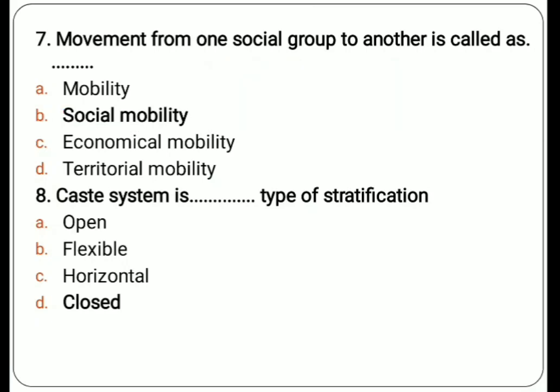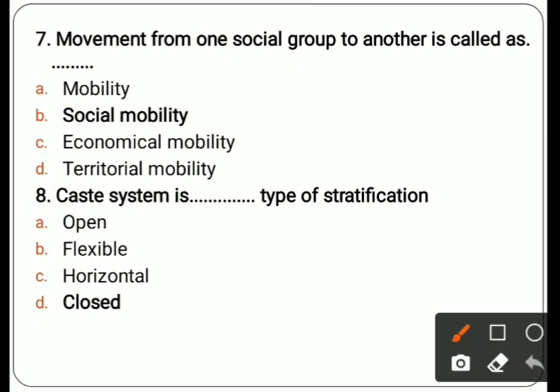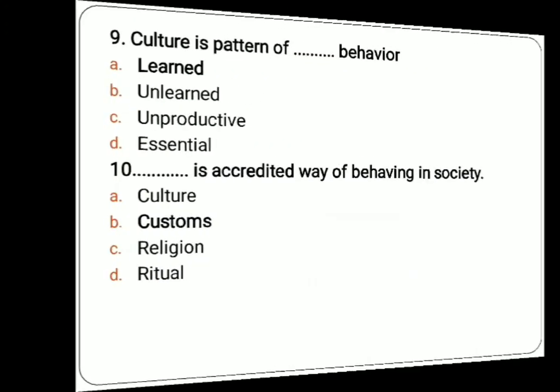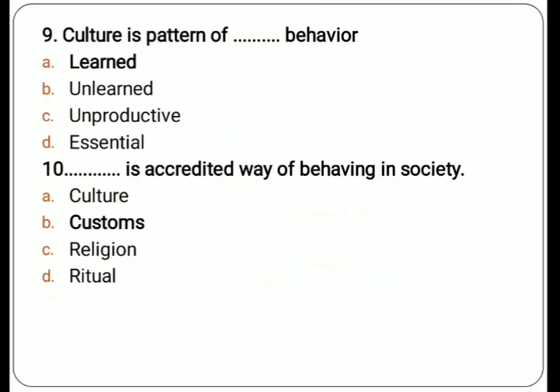Eighth question: caste system is a dash dash type of stratification. Options are open, flexible, horizontal, close. The correct answer is close — caste system is always a closed type of stratification. Vertical movement from one caste to another is not possible; some restrictions are there.